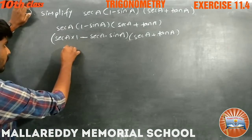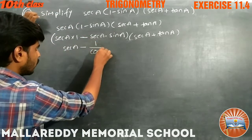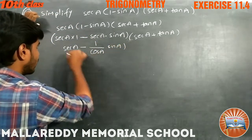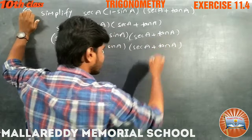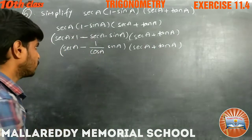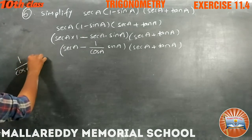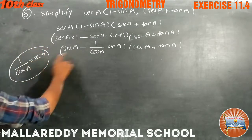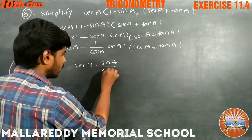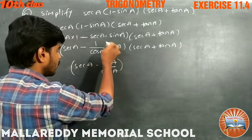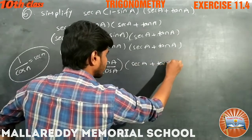Next, this becomes secant a minus — this secant a we can write as 1 by cos a. So secant a minus sin a by cos a, into secant a plus tan a.